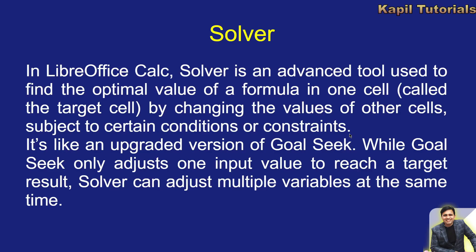In Goal Seek, we were only changing one input cell so that the output met our specific condition — only one input was changed. But here, multiple inputs can be changed. It is like an upgraded version of Goal Seek. While Goal Seek adjusts only one input value to reach a target result, Solver can adjust multiple variables at the same time to have the target result.